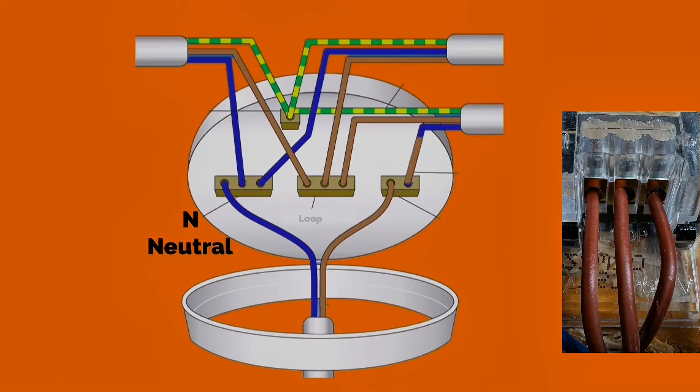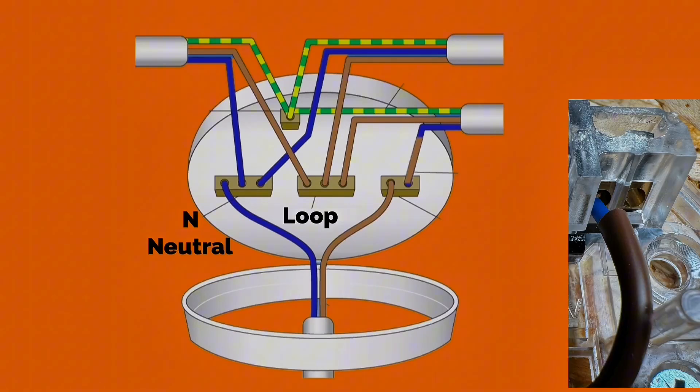The center block of three, identified with the word Loop, has the permanent line connections. The far right-hand side is usually identified with the letter L but is actually a switching line conductor that can give you control over the lamp to turn it on and off.